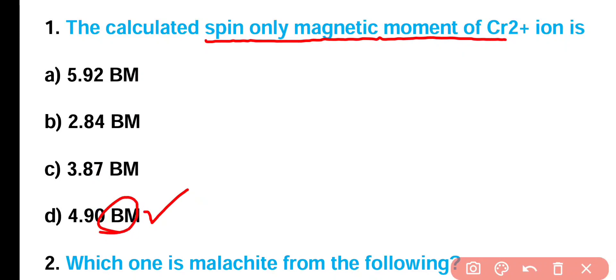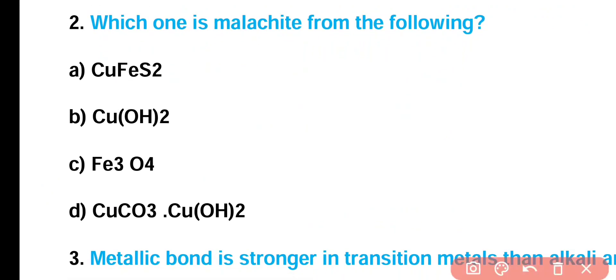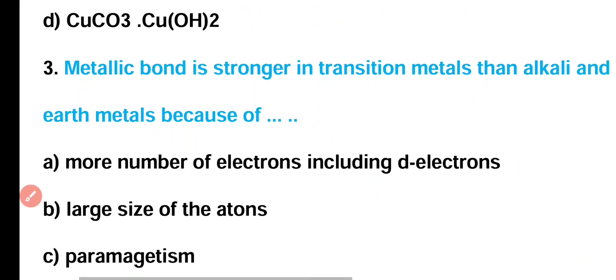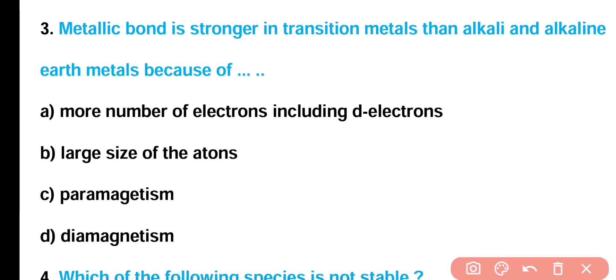Question number 2: Which one is malachite from the following — copper iron sulfide, copper hydroxide, iron oxide, or copper carbonate copper hydroxide? Correct answer is option D. Malachite is a mineral ore of copper, and its formula is CuCO₃·Cu(OH)₂.